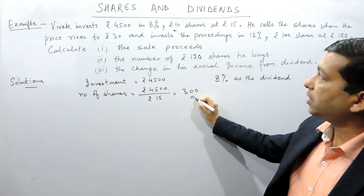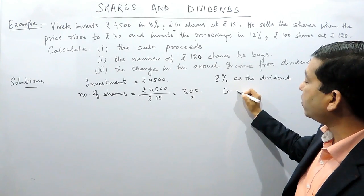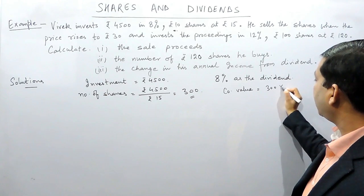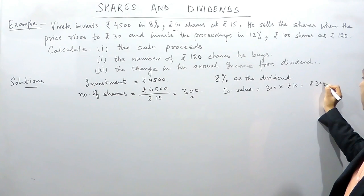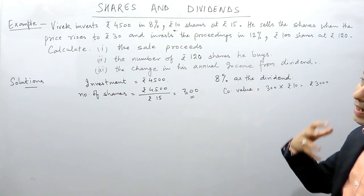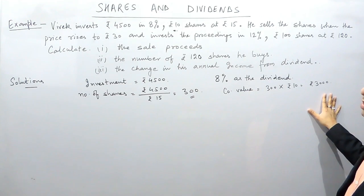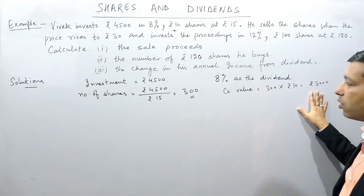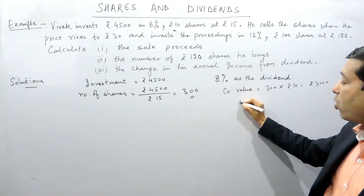So he is getting 300 total shares. The company value of 300 shares — since the company value is rupees 10 — is 300 multiplied by rupees 10, that is rupees 3000. So Vivek is investing rupees 4500 but the company is taking that investment as rupees 3000, and the company will pay 8% dividend on rupees 3000, not on rupees 4500.